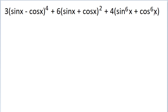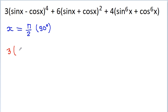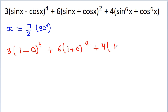In objective type problems, the best way to solve it is to put any standard value of x. For example, if we put x equal to pi by 2, that is 90 degrees, then sin(π/2) = 1 and cos(π/2) = 0. So we get 3 into (1 minus 0)⁴ plus 6 into (1 plus 0)² plus 4 into (1 plus 0), giving us 3 plus 6 plus 4, which equals 13.